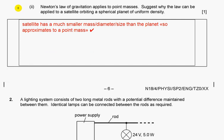Newton's law of gravitation applies to point masses. Suggest why the law can be applied to a satellite orbiting a spherical planet of uniform density: the satellite has a much smaller size than the planet, so it approximates to a point mass.